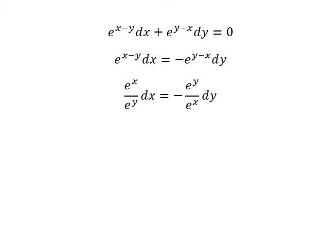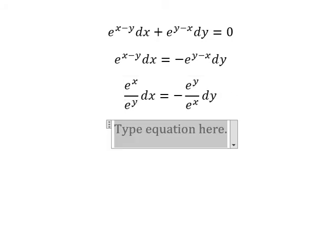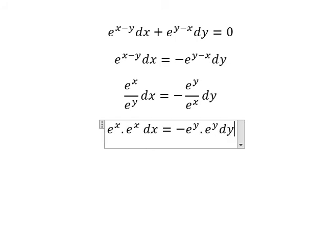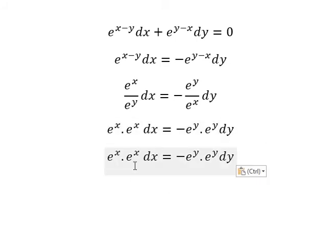And we get e to the power of x multiply with e to the power of x dx equals to negative e to the power of y multiply by e to the power of y dy.